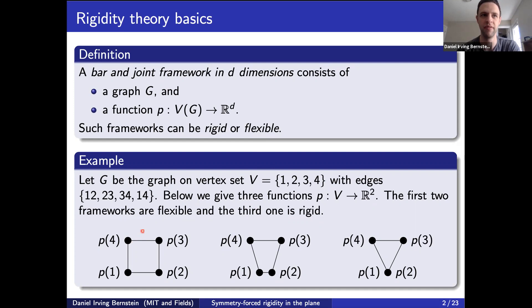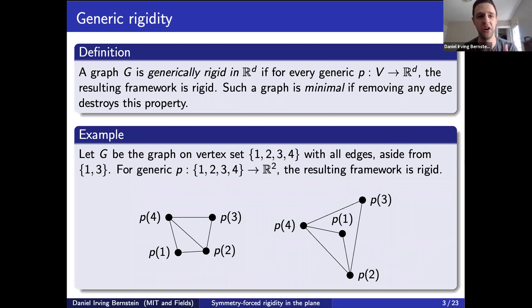Here are three examples in the plane, all on the same graph. Two are flexible — that's easy to see with the square, which you can shear. But if you do something like put two of the vertices at the same point, it becomes rigid. I'm going to be talking about generic rigidity, so I'll assume you don't do anything like that.